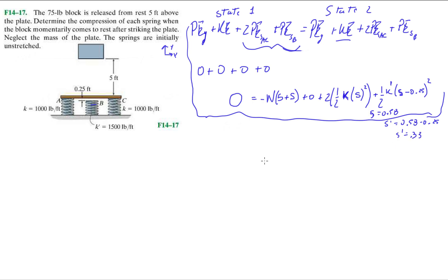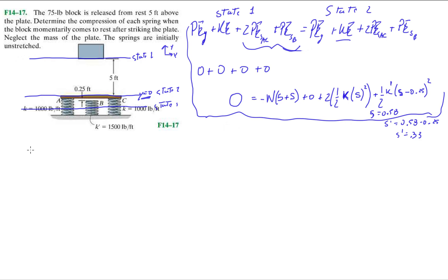Anyway, the way I'm presenting it: I'm going to set my zero potential at the plate. I'm going to do an intermediate step with state one, state two, and then state three when the springs are fully compressed. My first step: at state one, my block has a potential energy equal to the weight times h1. There's no kinetic energy because it's still at rest and all springs are uncompressed, so no spring potential energies.